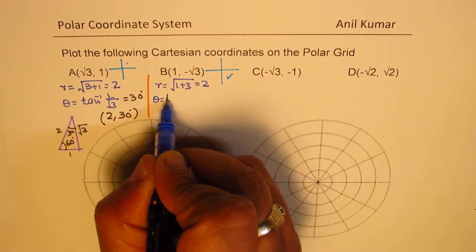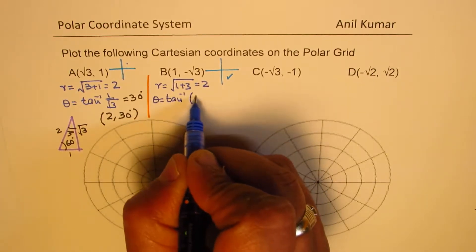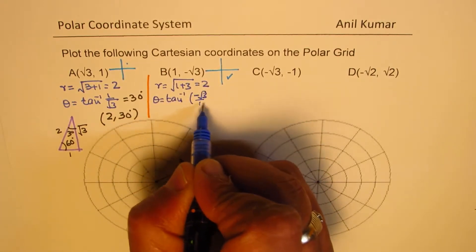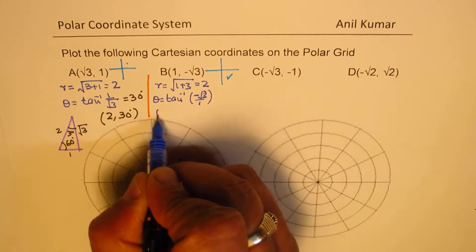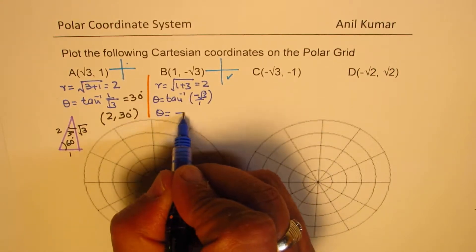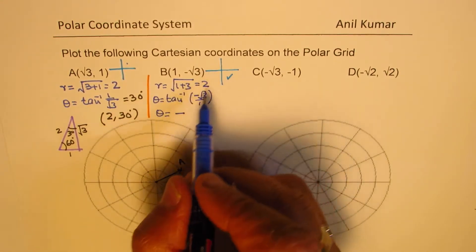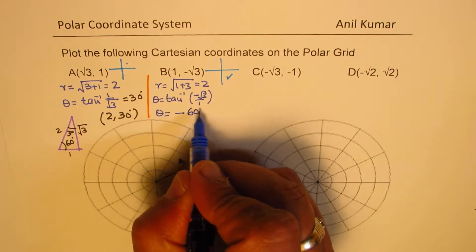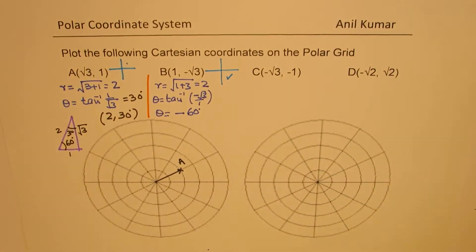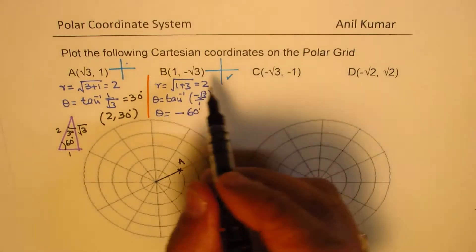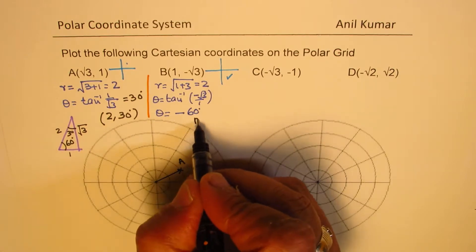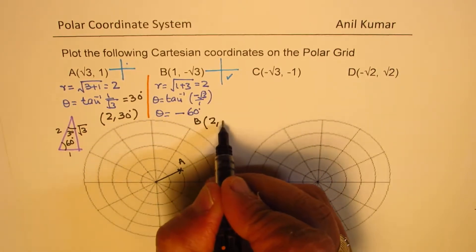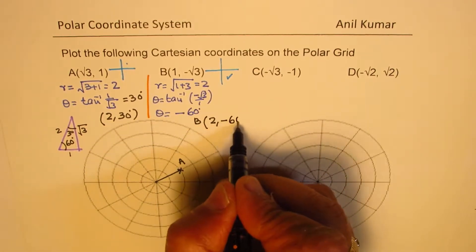Theta equals tan inverse of (-√3 / 1), and that means theta equals negative of 60 degrees — since √3 corresponds to 60 degrees. Therefore, this point B can be written as (2, -60°).